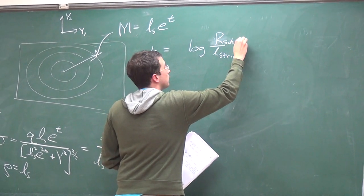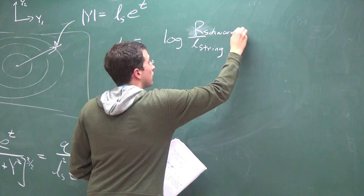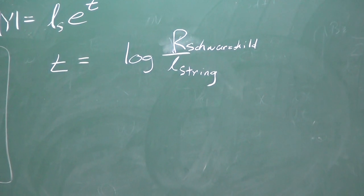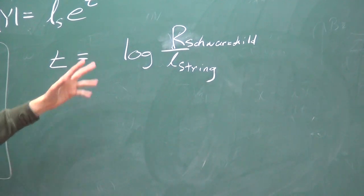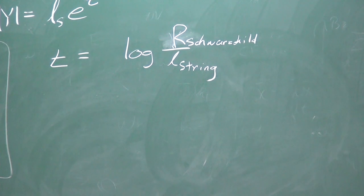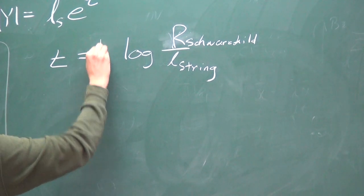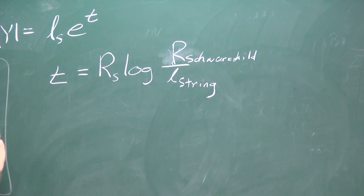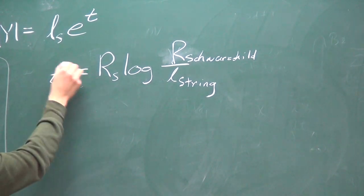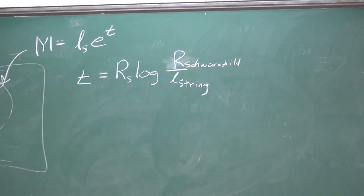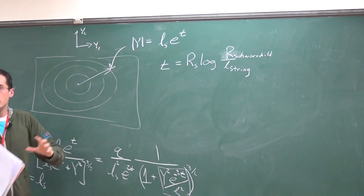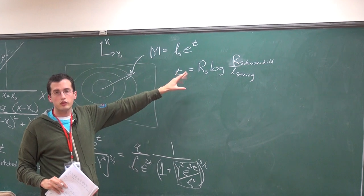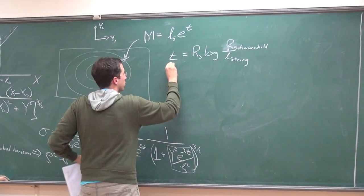I've been a little sloppy with units — this T looks like it doesn't have any dimension, but if I properly work in Schwarzschild coordinates, everything should be measured in terms of the Schwarzschild radius. So this is the time it takes for the black hole, once it's disturbed by an electron, for it to settle down. This time scale comes up again and again in studying black holes. This is called the scrambling time.